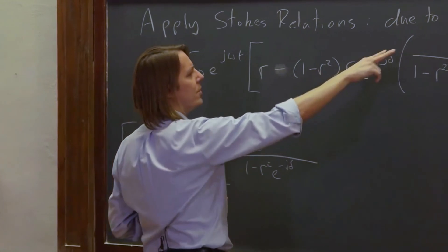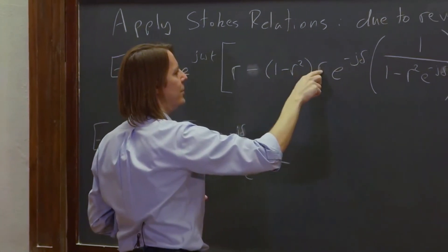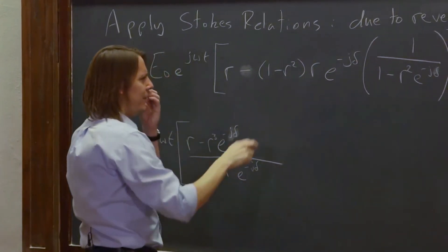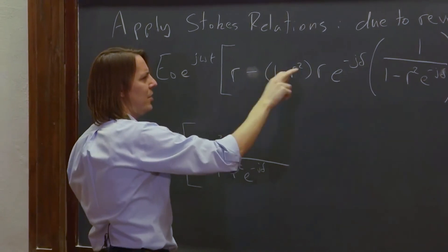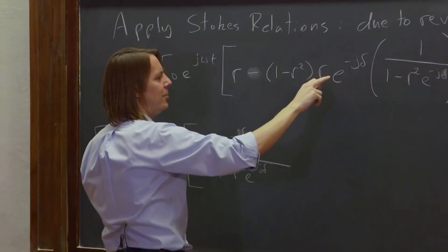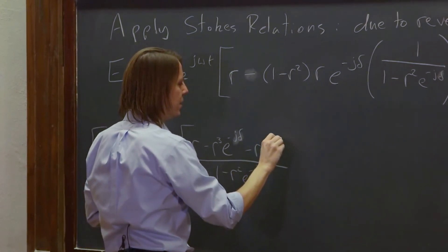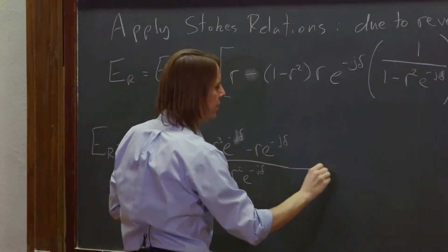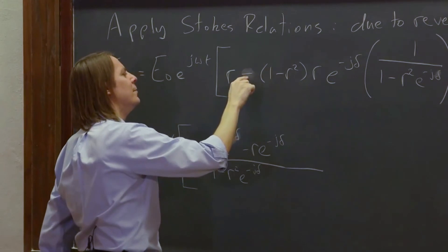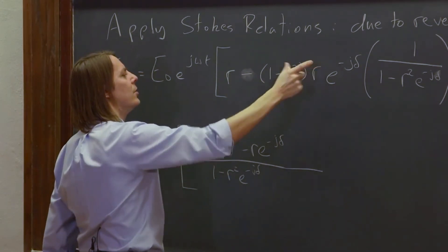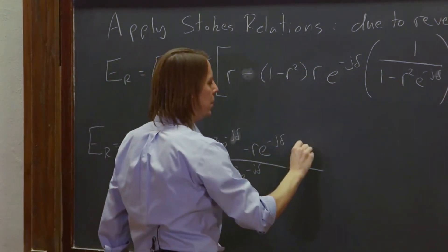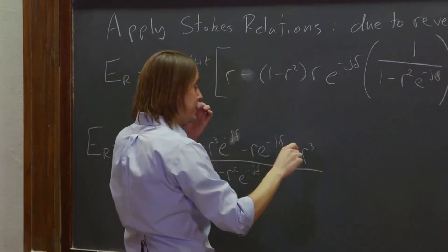And then up here, we have to distribute that r on that and multiply it by all that. So that's minus r times e to the minus j delta, minus r e to the minus j delta. And then we have minus minus is plus r cubed e to the minus j delta.